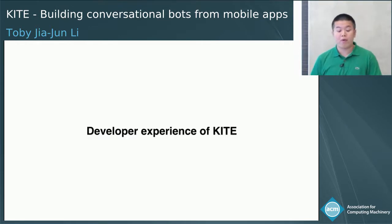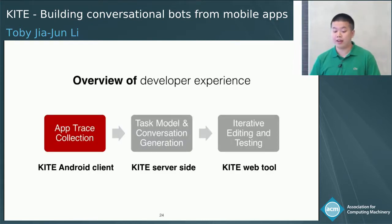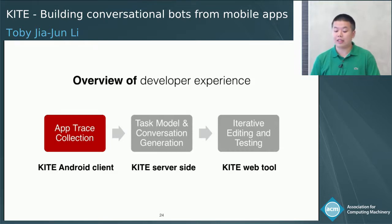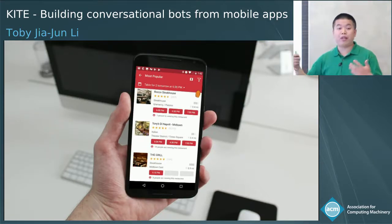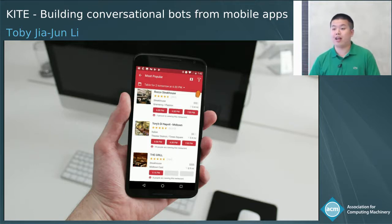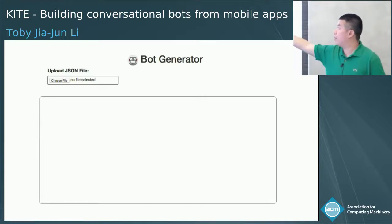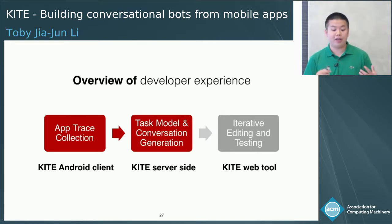I will explain our approach by walking through the developer experience of Kite. Bootstrapping a bot using Kite can be divided into three steps. The developer will first use our Android client to collect some traces of using a mobile app to complete the target task. For example, if the user is building a restaurant reservation bot, they will probably need to use traces from apps like OpenTable. For a simple task like this, it usually needs around five to ten traces, depending on the complexity. Then the user can import the traces through the web interfaces provided by the Kite web tool. From those app traces, the server side of Kite will automatically extract the task model and generate a conversational layer on top of it.